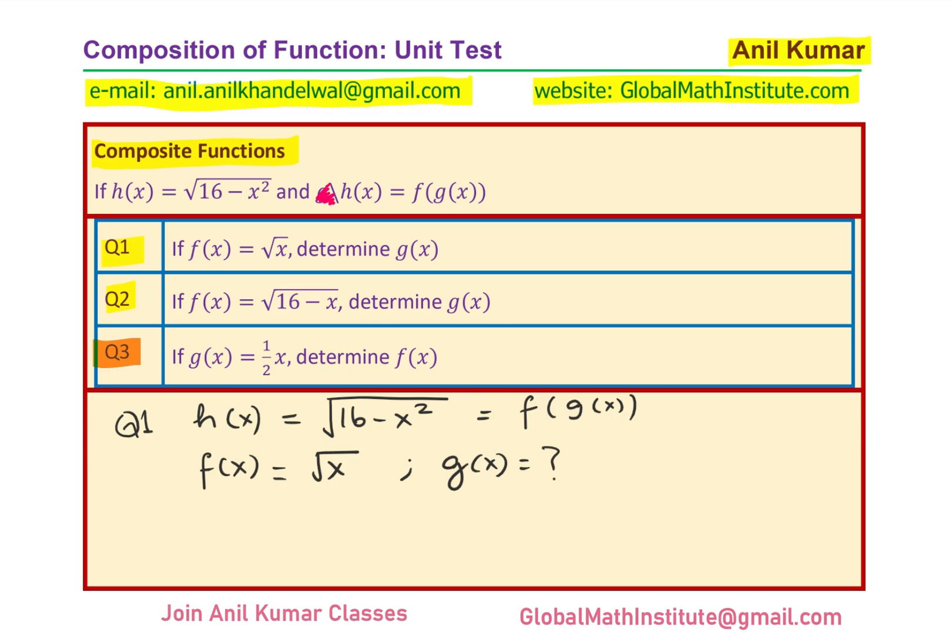Clearly g(x) which is inside the function should be equal to what? We can write from here g(x) should be equal to 16 minus x square. Since that matches, perfect, you get the idea. That is how you could find the inside function of a composite function.